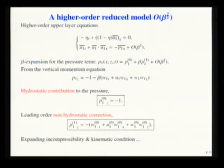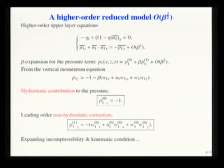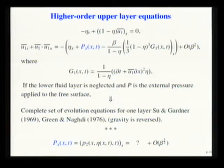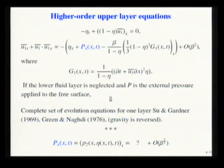It is possible to improve this model by considering the already known higher-order upper layer equations, performing a beta expansion for the pressure term from the vertical momentum equation. We recognize first the hydrostatic contribution to the pressure, and also a leading-order non-hydrostatic correction. Using kinematic conditions and taking means, it is possible to obtain a higher-order system. What is missing is the pressure at the interface — this is a term that must be added — and some may recognize the evolution equations obtained by Su and Gardner and Green-Naghdi independently.